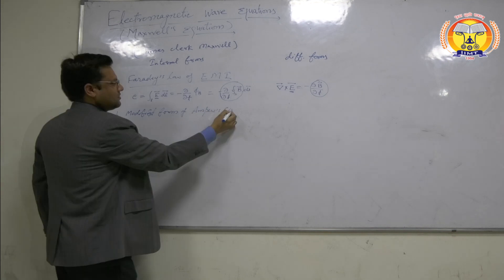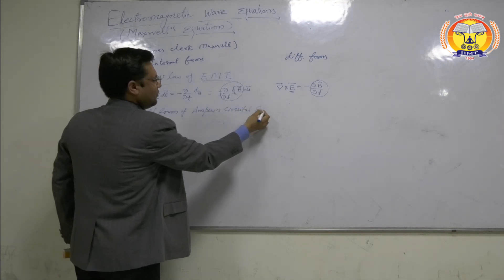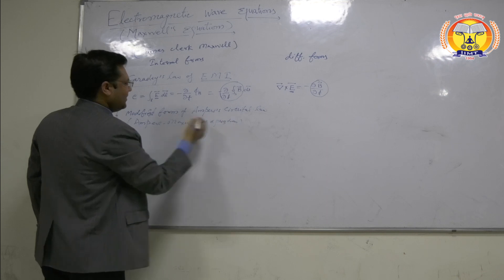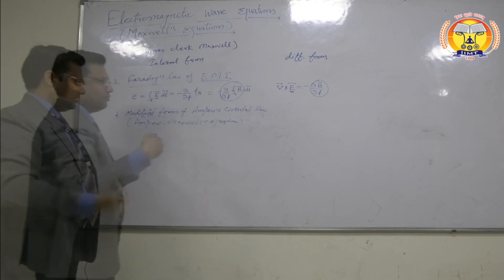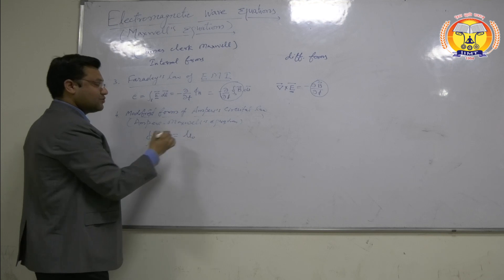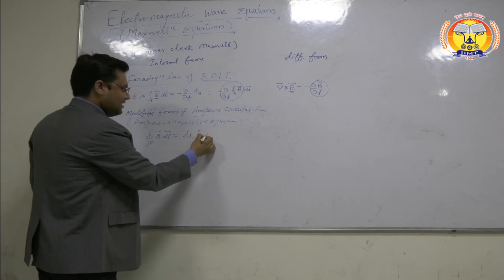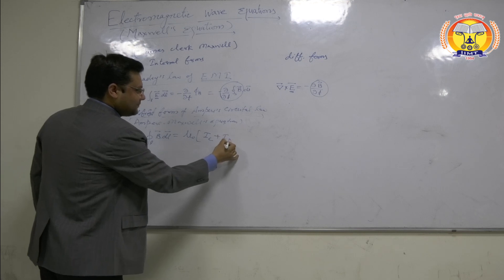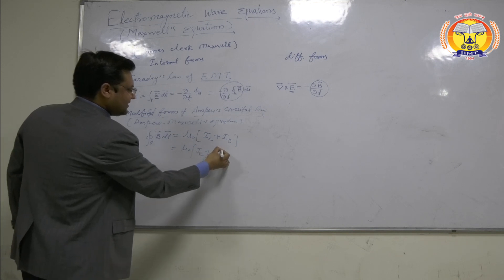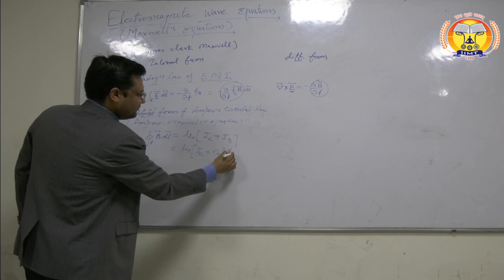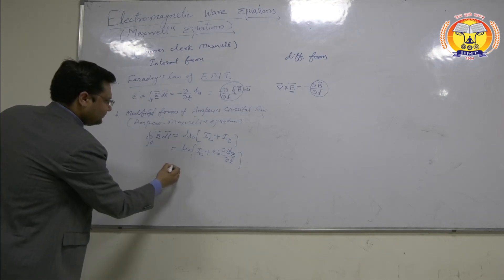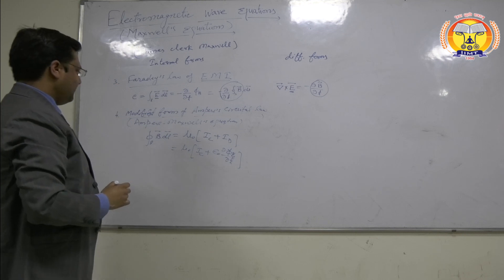The fourth equation is the very important modified form of Ampere's circuital law, also called the Ampere-Maxwell equation. Maxwell modified Ampere's circuital law so that the line integral of B dot dl equals mu naught times the total current — which means conduction current plus displacement current — that is, mu naught times (conduction current plus epsilon naught times del phi_E over del t, the change in electric flux).